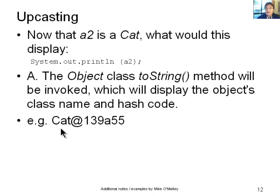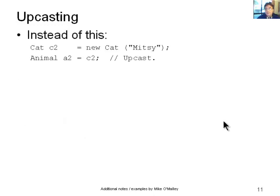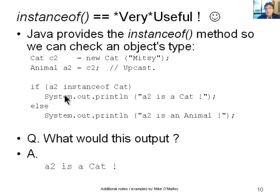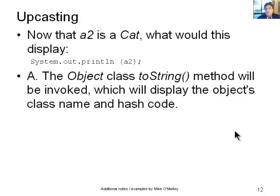So A2 really is a cat. Not only is instanceof saying it's a cat, back here, instanceof, A2 is a cat, but also the toString method behind the scenes is also showing it's a cat. So A2 is a cat.